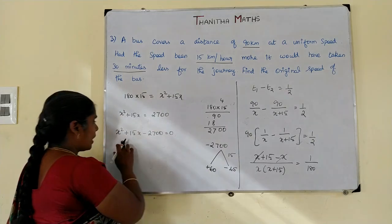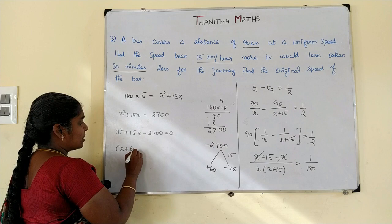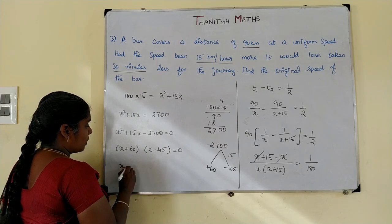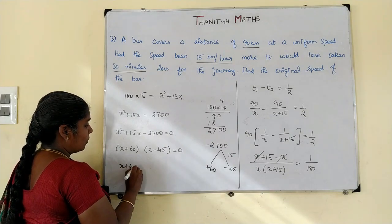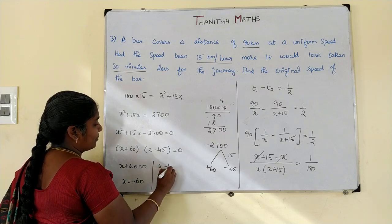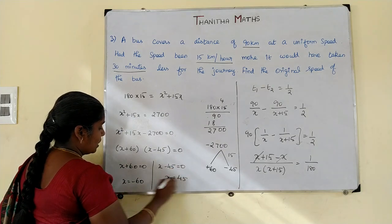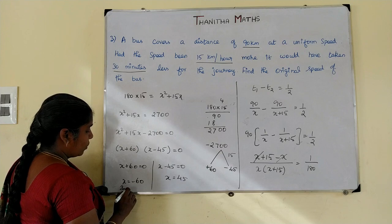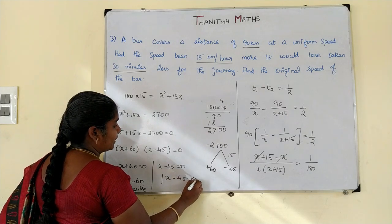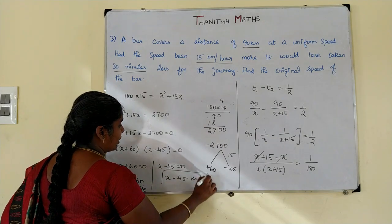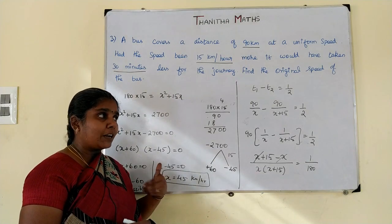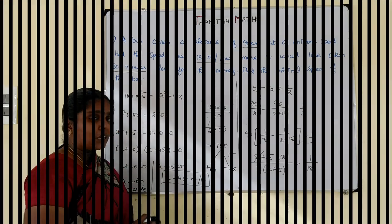So the factors are x plus 60 and x minus 45 equal to 0. This gives x equal to minus 60 or x equal to 45. Since speed cannot be negative, x equals minus 60 is impossible. Therefore the uniform speed of the bus is 45 km per hour.